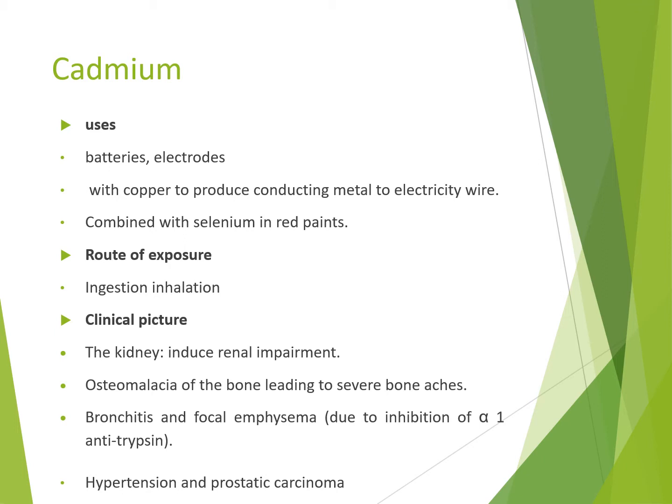الكادميوم بيفرق عن باقيهم في حاجات: زي اللِّيد، بيأثر على الكلية ويعمل nephrotoxic kidney impairment. لكن الكادميوم كمان بيترسب في العظم فبيعمل osteomalacia - اللي هي قبل الـ osteoporosis - فبيبقى عنده severe bony aches. وبيأثر على الـ respiratory tract: بيعمل bronchitis، وساعات emphysema عشان بيحصل inhibition للـ anti-trypsin.